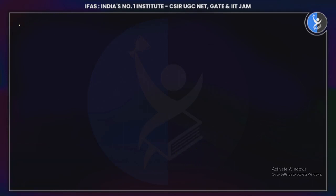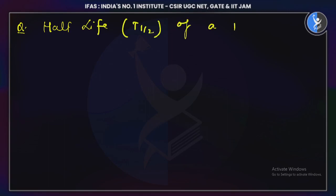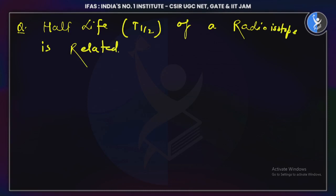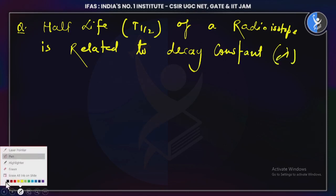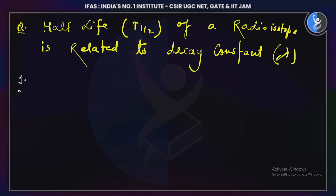Simple easy question: the half-life T½ of a radioactive isotope is related to the decay constant lambda. The formula connects T½ and the decay constant lambda.